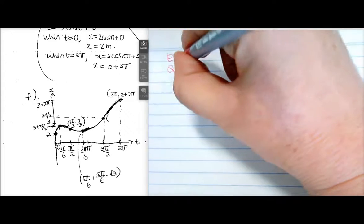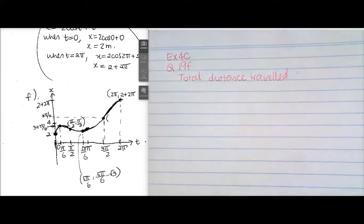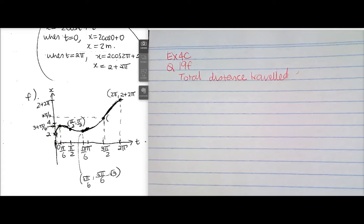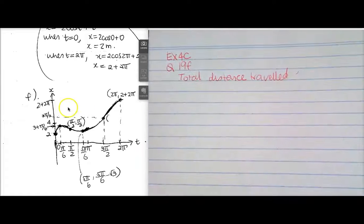Exercise 4C, question 19F — total distance travelled. It can be worked out a few ways. We know distance travelled is the area under the velocity curve, but you can also just look at where the particle is. The cursor is at 2 metres to the right of the origin, then going up to 3 + π/6. So the particle travels from 2 to 3 + π/6, then back down to 5π/6 − √3, then up to 2 + 2π.